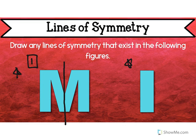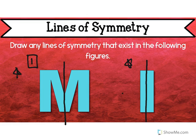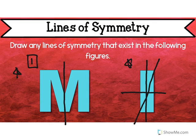Now the I — I can fold it in half right here, and I could also fold it in half right here. Diagonal, it wouldn't really be the same either way. So this has two lines of symmetry.